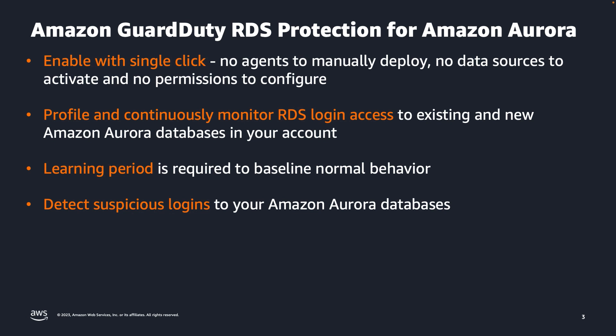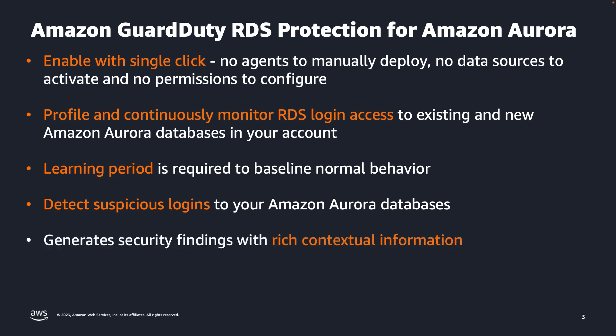After the learning period, Amazon GuardDuty uses its tailored machine learning models to detect suspicious logins to your Amazon Aurora databases. Once a potential threat is detected, Amazon GuardDuty generates a security finding that includes database details and rich contextual information on the suspicious activity. This is integrated with Amazon Aurora for direct access to database events without requiring you to modify your databases, and is designed to not affect database performance.